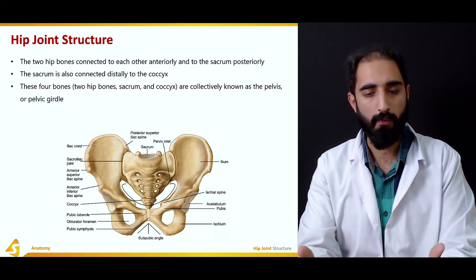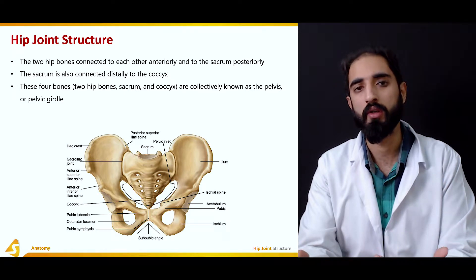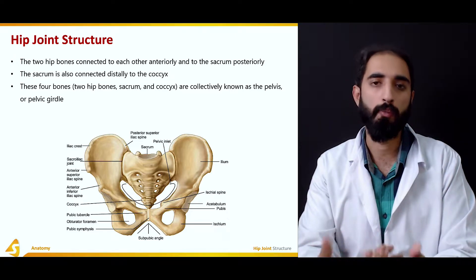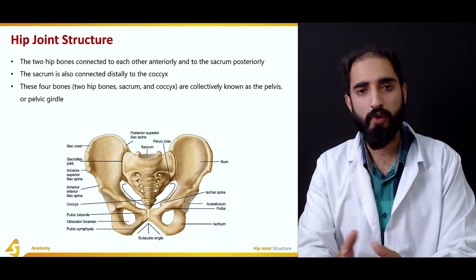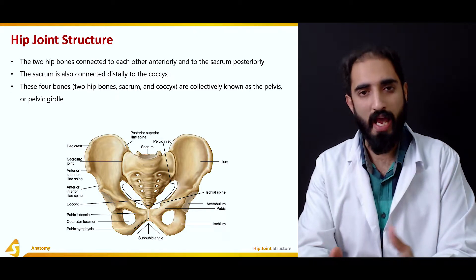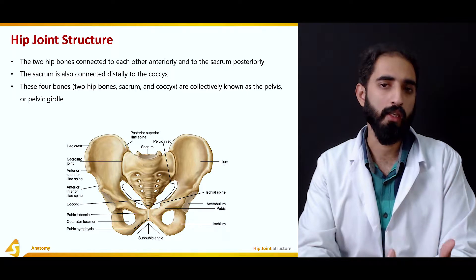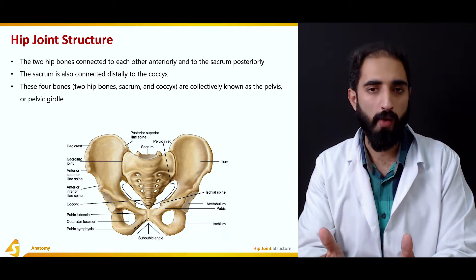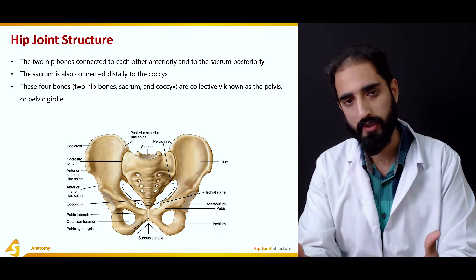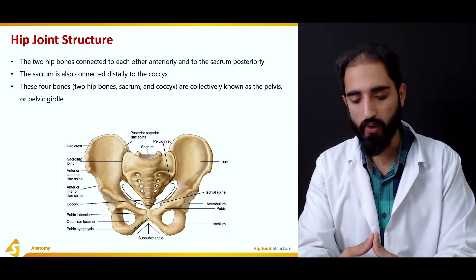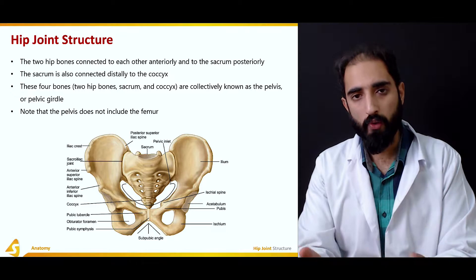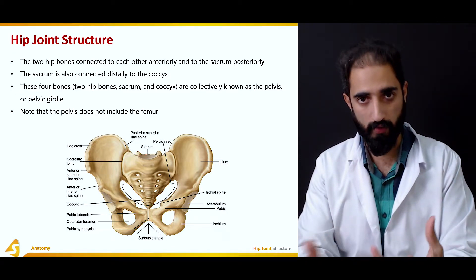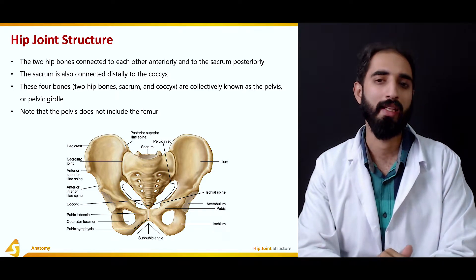These four bones — the two hip bones or two innominate bones — along with the sacrum and coccyx are collectively known as the pelvis or the pelvic girdle. There are different morphological shapes of the pelvis, the most common being the android and gynecoid. The android pelvis is usually found in males and the gynecoid is found in females. The gynecoid pelvis is broader, with a bigger pelvic inlet and outlet functionally suitable for childbirth. It is important to note that the pelvis does not include the femur.